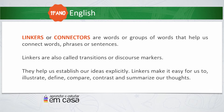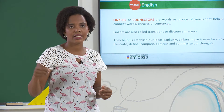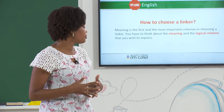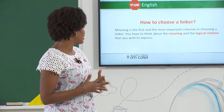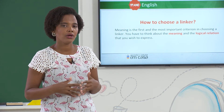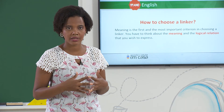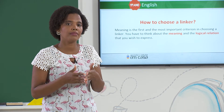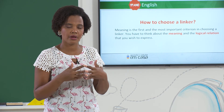But how can I choose the appropriate linker when I'm writing or speaking? Well, to choose the appropriate linker, you should take into account the meaning. The meaning is the first and the most important criterion in choosing a linker. You have to think about the meaning and the logical relation that you wish to express when speaking or writing. There are different types of linker, and according to the meaning, we can choose the appropriate one.